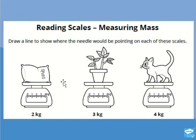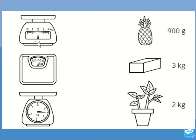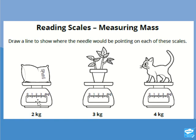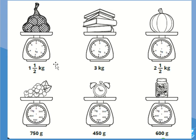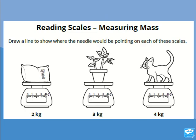On the next page, you just have to draw a line showing where the needle would be pointing. For example, spuds or potatoes are two kilograms, so you draw the line up to two kilograms, just like that. That's exactly what you do — draw the line in to show how much it's weighing. Give it a go!